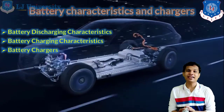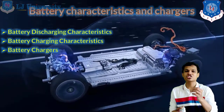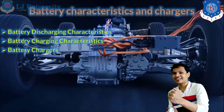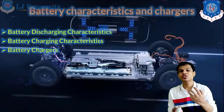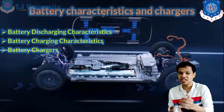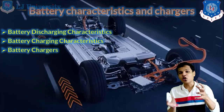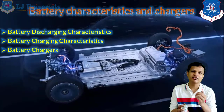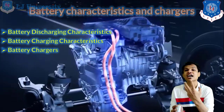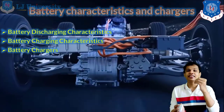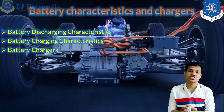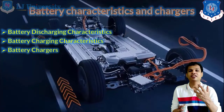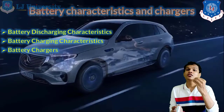The next topic is battery characteristics and chargers. To learn the characteristics of a battery, we need to see how the battery discharges and charges. From those characteristics we will decide which type of battery chargers to use and how charging should be applied. This depends on the different charging and discharging characteristics of our electric vehicle.